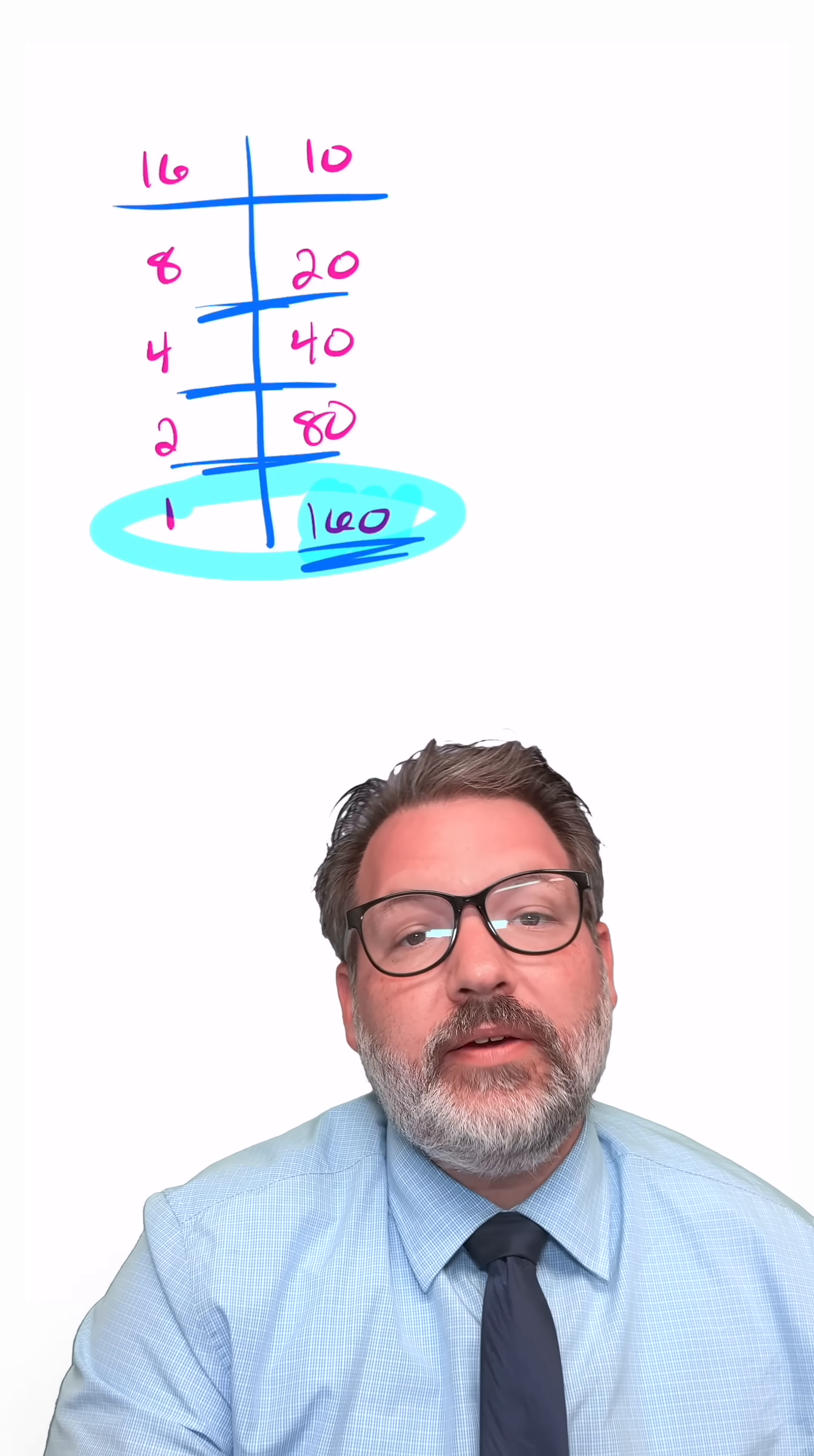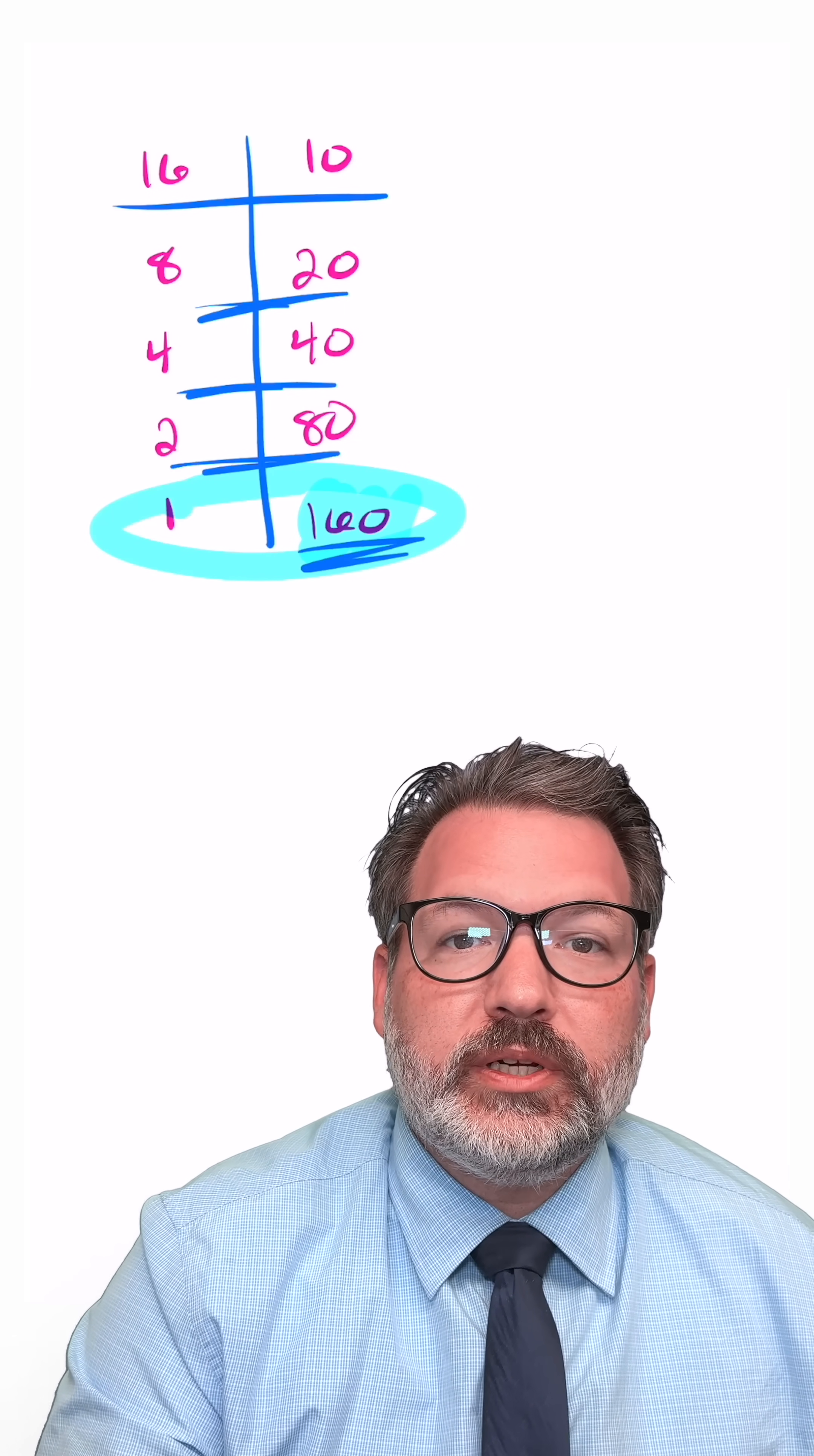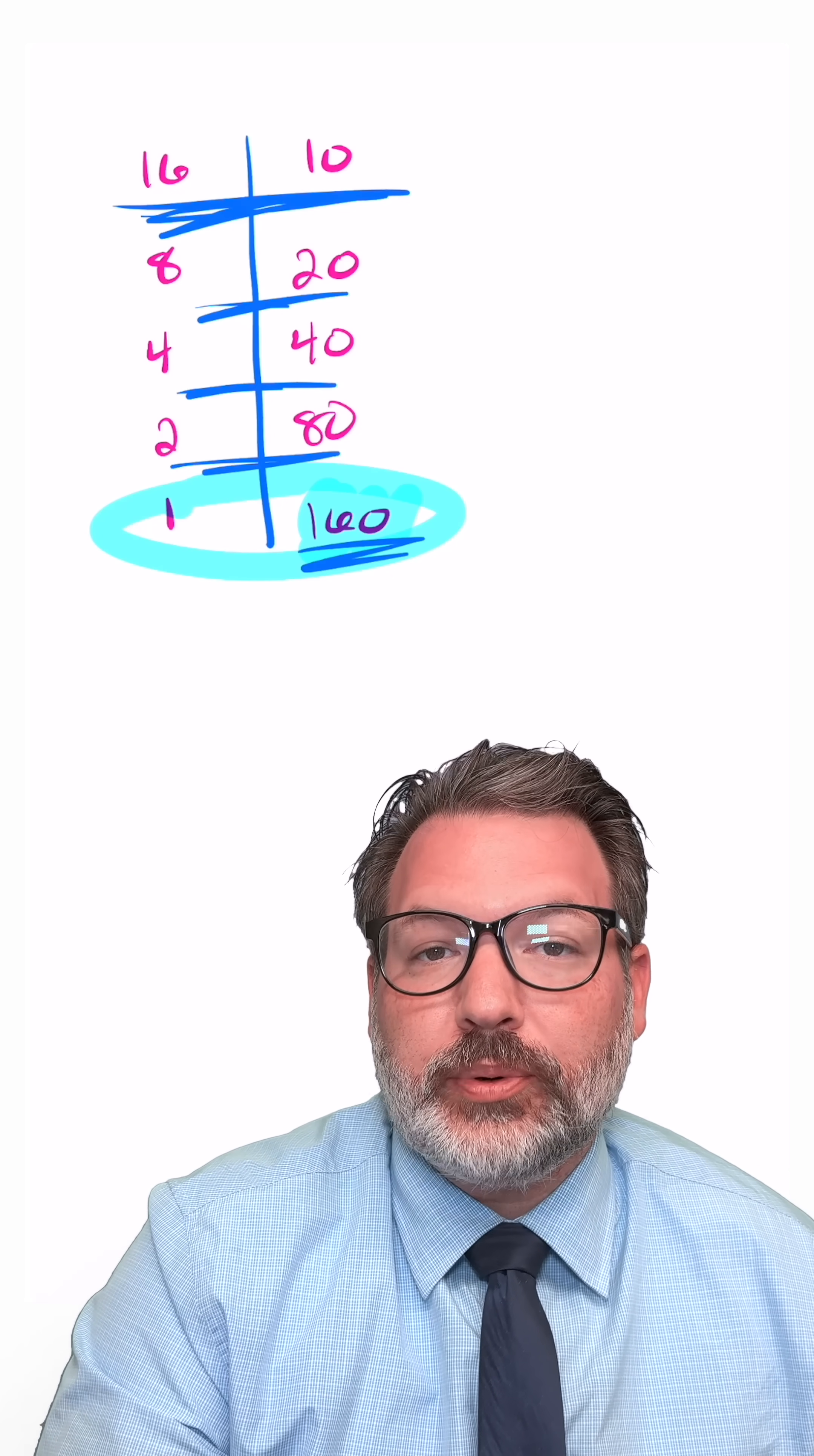In fact we can even check and see at every row along the way if we just multiply the two numbers together we're retaining the same product of 160 that we could have seen from the very beginning in the process.